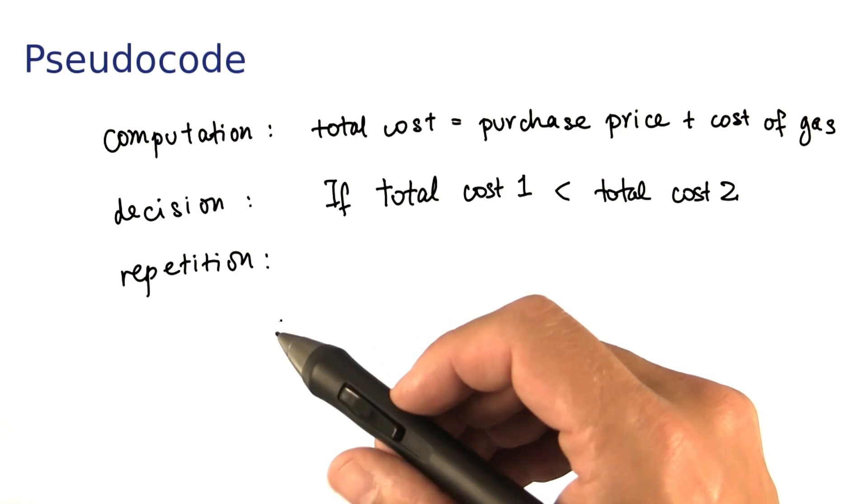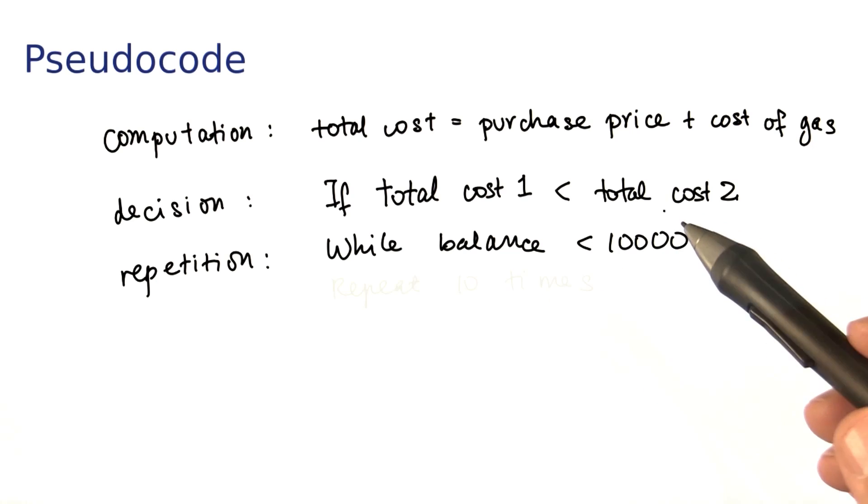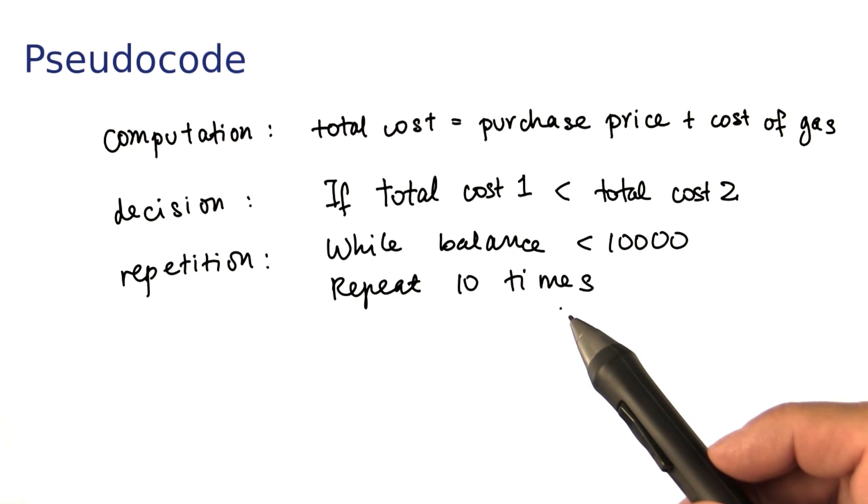You might want to repeat certain steps while the bank balance is less than your target, or repeat some action, say, 10 times.